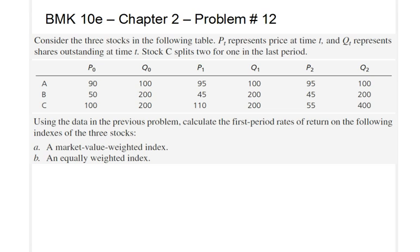We're basically given the same data as in the previous problem number 11 and we would like to calculate the first period rates of return on the following indexes. In part A we are using a market value weighted index and in part B an equally weighted index. When we say the first period rates of return, what we really mean is as we move from period 0 to period 1.